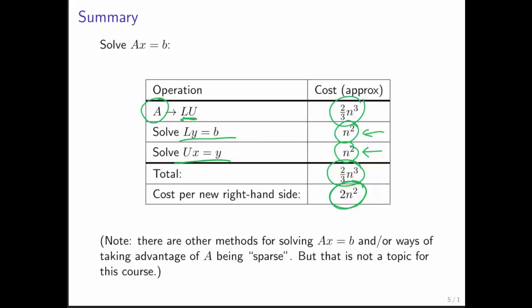Now, there are other ways of solving ax equals b. There are ways of taking advantage of zeros that are in A, which is known as A being sparse. Let's not talk about that in this course. That's a different course.